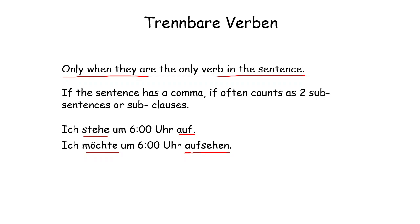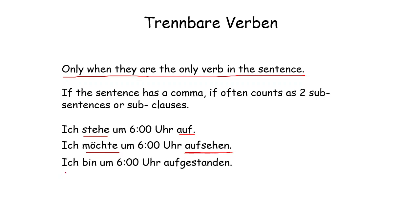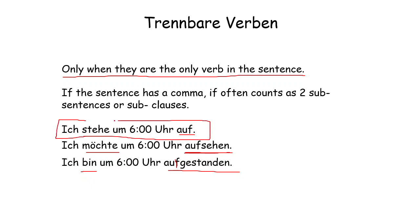The modal verb goes at the second position and the infinitive goes at the end as a whole. For the perfect tense: 'Ich bin um sechs Uhr aufgestanden' — when forming the perfect, 'ge' comes in between and 'aufstehen' changes to 'aufgestanden'. So with the only verb in a sentence, the verb comes at the second position and the prefix goes at the end.